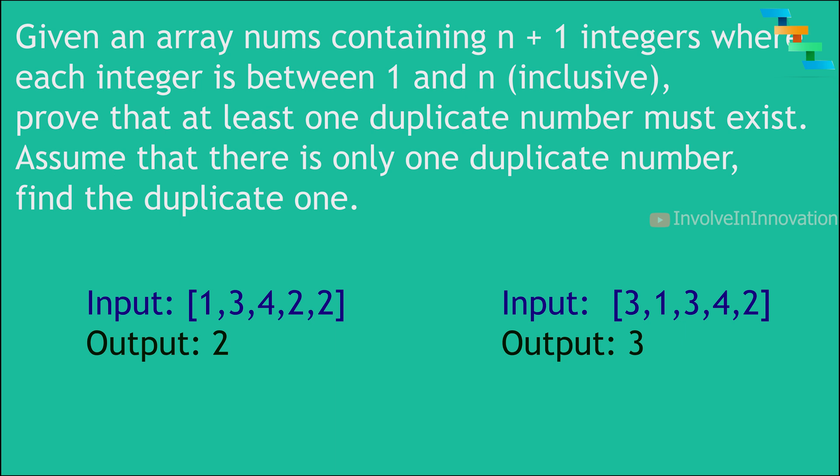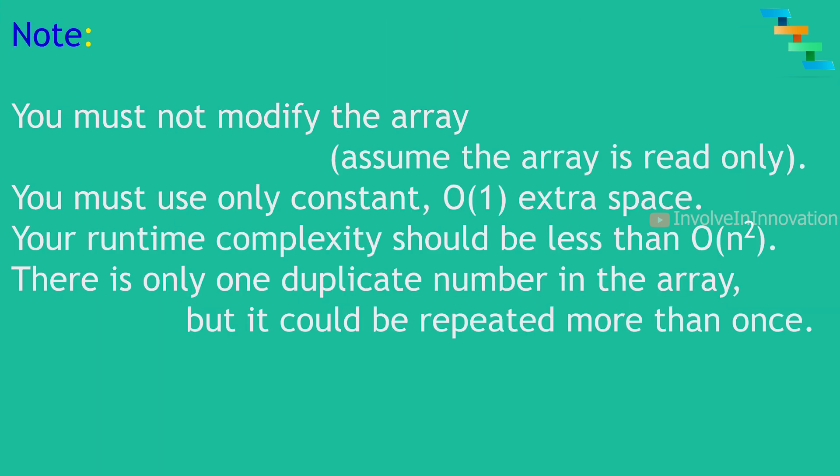The constraints are: you must not modify the array (it is read-only), space complexity must be O(1), and runtime complexity must be less than O(n²). There is only one duplicate number in the array. For this we will use Floyd's tortoise and hare cycle detection algorithm. The motivation comes from the linked list cycle 2 problem, which I already have a video about in my channel.